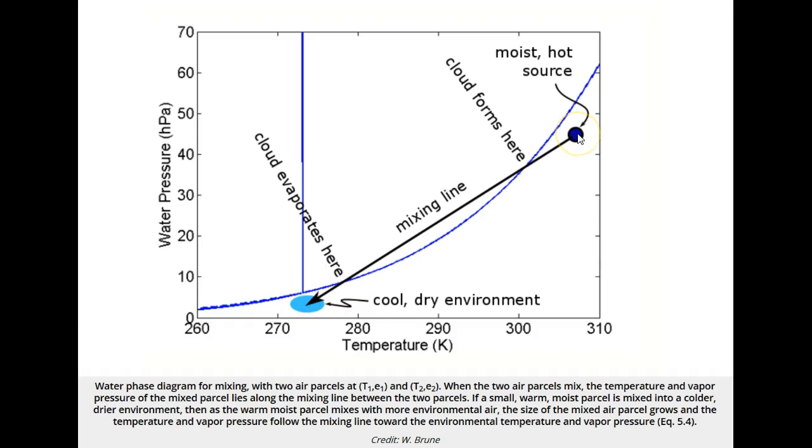As the warm, moist air mixes with the colder, drier air, the temperature and vapor pressure of the mixed air parcel take on values that lie on the line between those of the two initial air parcels.